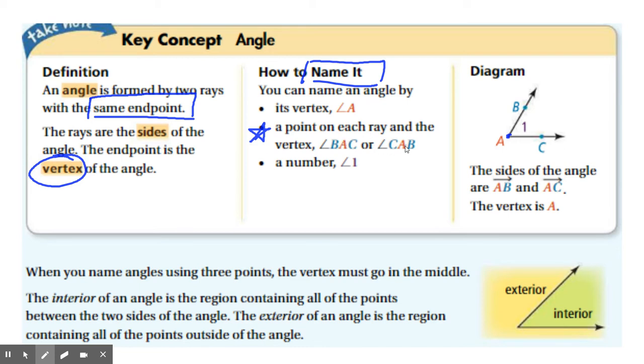Notice that A remained in the middle. This sentence right here talks about that. When you name angles using three points, the vertex must go in the middle.